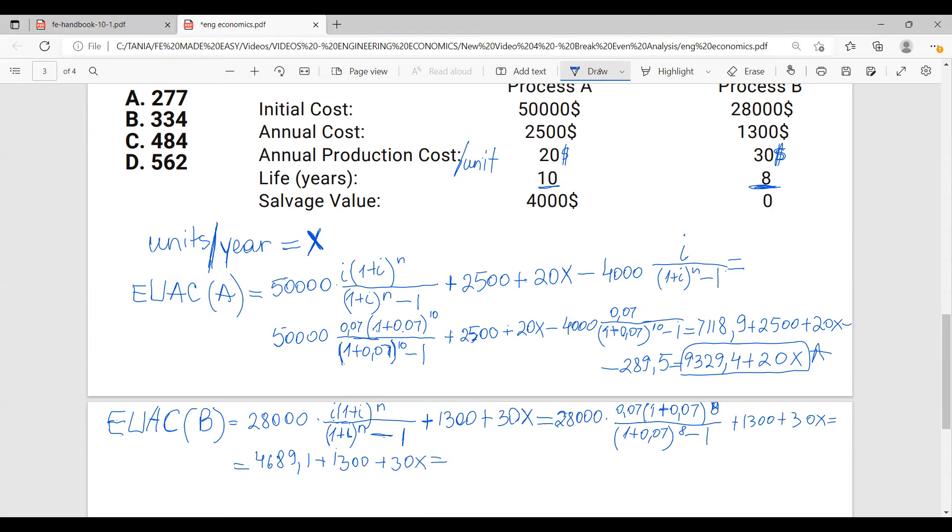And all of it, it's going to be 5,989.1 plus 30X. And this is the equivalent uniform annual cost for process B.